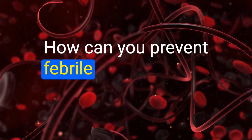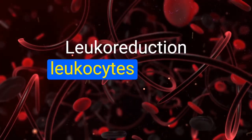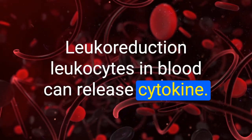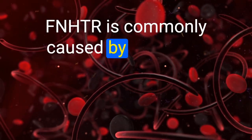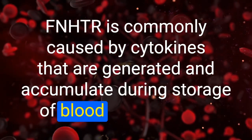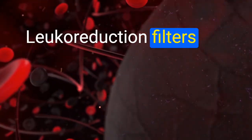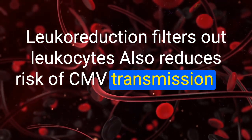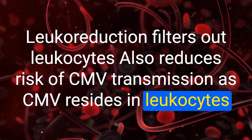How can you prevent febrile non-hemolytic transfusion reactions? Leukoreduction. Leukocytes in blood can release cytokines — FNHTR is commonly caused by cytokines generated and accumulated during storage of blood components. Leukoreduction filters out leukocytes and also reduces risk of CMV transmission, as CMV resides in leukocytes.